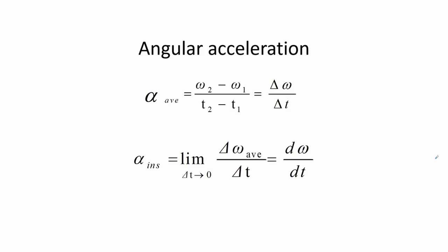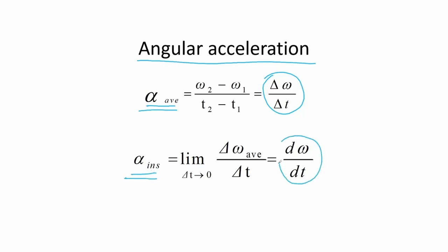As we learned from motion on a straight path, we can also get an equivalent of acceleration. Here we have the average angular acceleration, alpha average, which is the change in angular velocity over change in time. Also, the instantaneous angular acceleration is the derivative of angular velocity over the derivative of time.